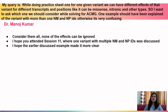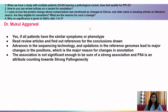Dr. Manoj asks: when doing practice sheet 1, we can have different effects of the variant for different transcripts and positions — which one should we consider for ACMG? The example with multiple NMIDs and NPIDs was discussed in session 11. Use all the variants — do not ignore any. I think by now this should be very clear.